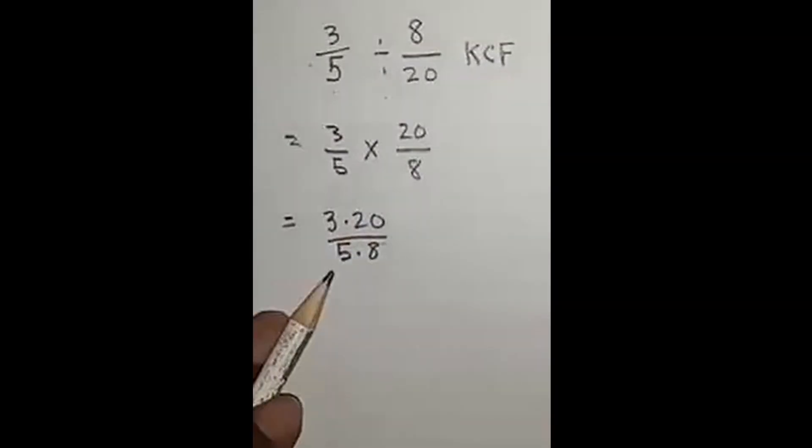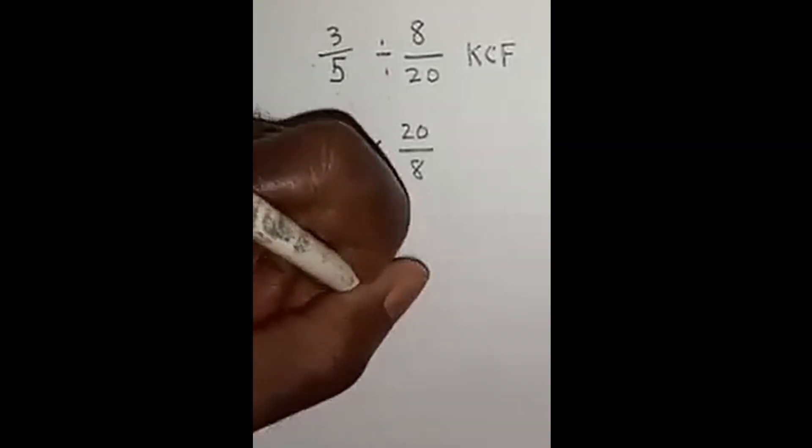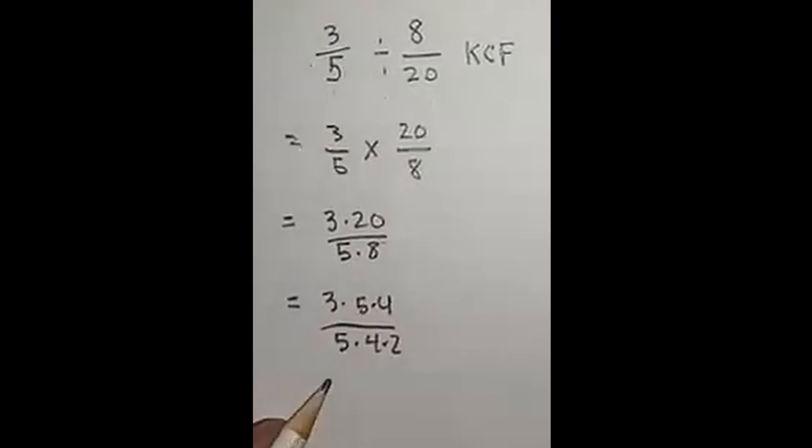Now this is what we have. Let's cancel some of this. As you can see, I broke down the 20 to 5 times 4 and 8 into 4 times 2. That way we can cancel.